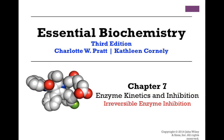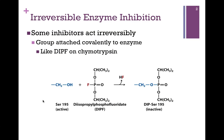We're continuing our studies in Chapter 7 on Enzyme Kinetics and Inhibition, and in this lesson we'll be looking at irreversible enzyme inhibition. There are substances that can inhibit enzyme catalysis, and they act irreversibly — that is to say, they permanently inactivate the enzyme.